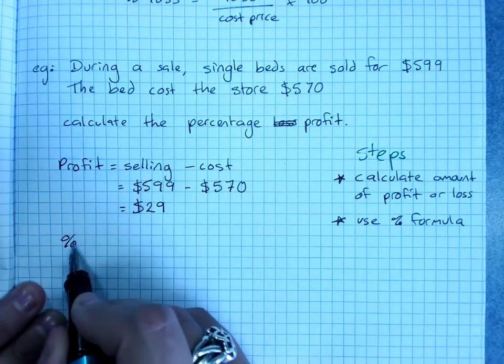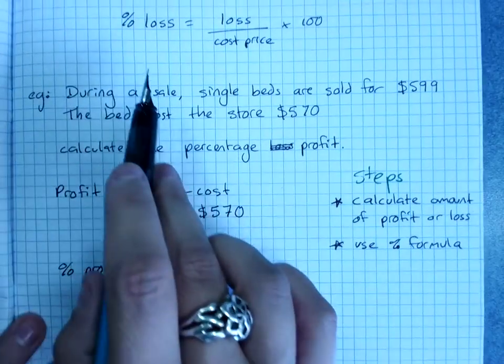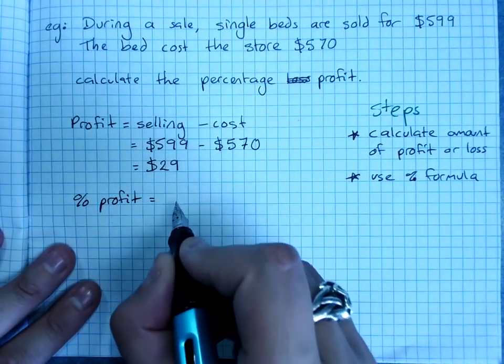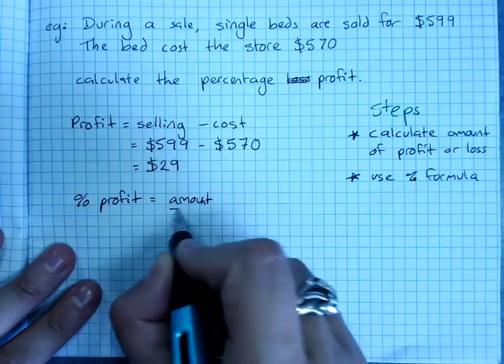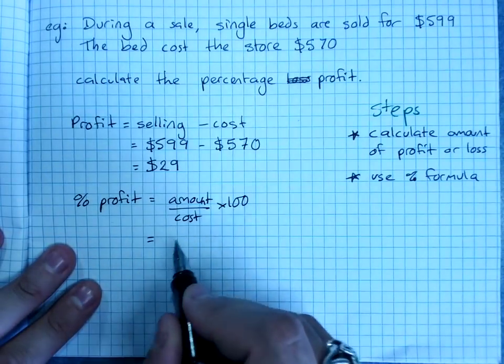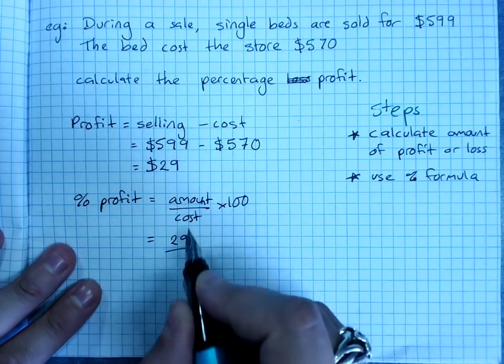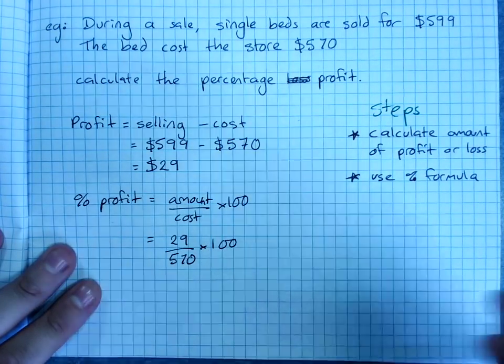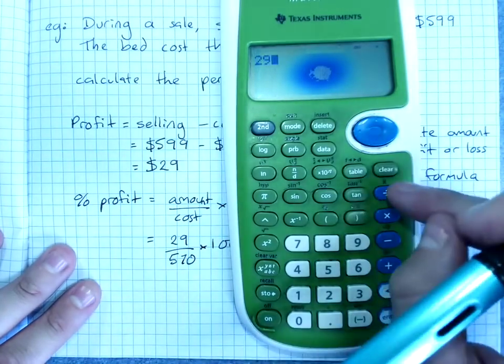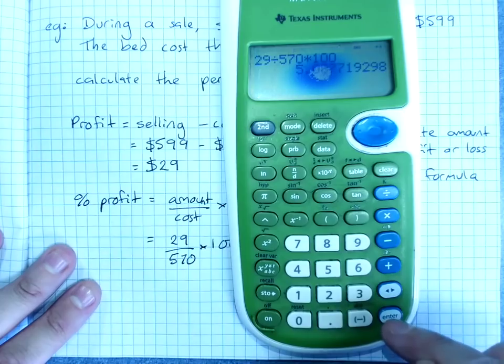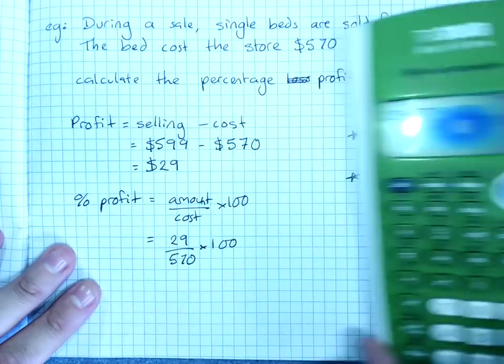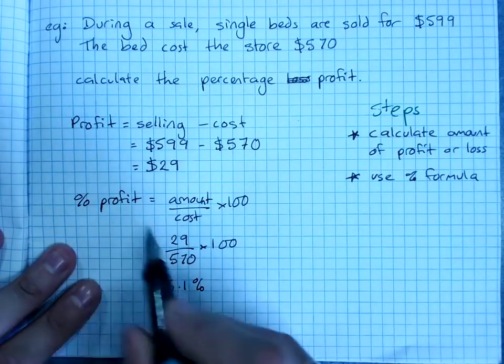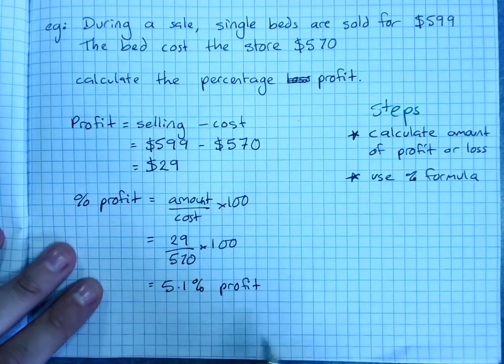Then the percentage profit. Go to our formula. The amount of profit over the cost price times 100. That's our formula. The amount of profit was $29. The original cost price was $570 times 100. 29 divided by $570 times 100. And 5.087. So to one decimal place we'll have 5.1% and because it's profit we say we're finding profit.